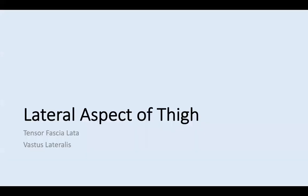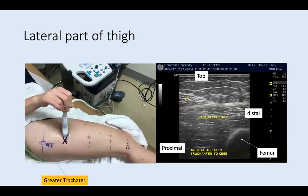Now let's talk about the lateral aspect of the thigh: tensor fascia latae and vastus lateralis. With the patient in a sidelying position, starting at the greater trochanter and moving one quarter down toward the knee, you can see tensor fascia latae winding down and attaching to the iliotibial band, with vastus lateralis deep to it.